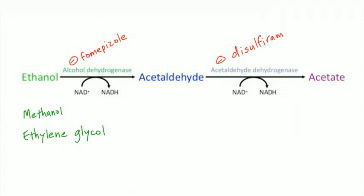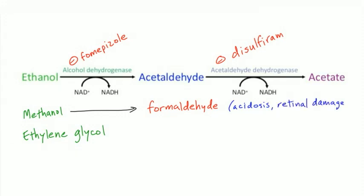Fomepizole is used to treat methanol and ethylene glycol poisoning. Methanol is wood alcohol — alcoholics may try to drink it — but instead of metabolizing to acetaldehyde, methanol metabolizes to formaldehyde, which is toxic. Formaldehyde causes acidosis and retinal damage or blindness even in small amounts like 15 cc's. To treat methanol poisoning, we inhibit alcohol dehydrogenase with fomepizole, preventing formaldehyde formation. Alternatively, give the patient ethanol to compete with methanol for the enzyme, or perform dialysis.